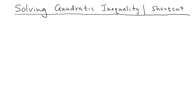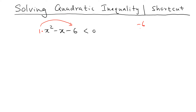In this video we're going to talk about a shortcut method to solve a quadratic inequality. Let's say we have x squared minus x minus 6 less than 0. The first step is to factor this. We notice that the leading coefficient is 1, and we're going to use the AC method — multiply these two numbers, so in this case you get negative 6.